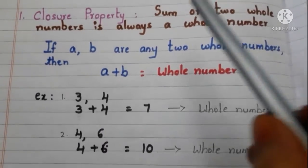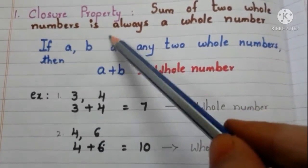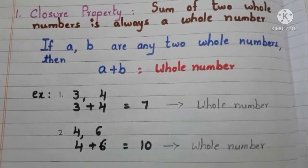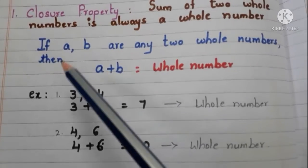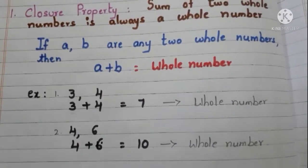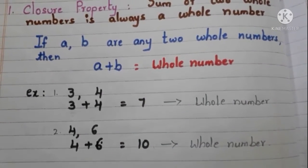Closure property: Sum of two whole numbers is always a whole number. If a and b are any two whole numbers then a+b is a whole number. Let us see with the examples.